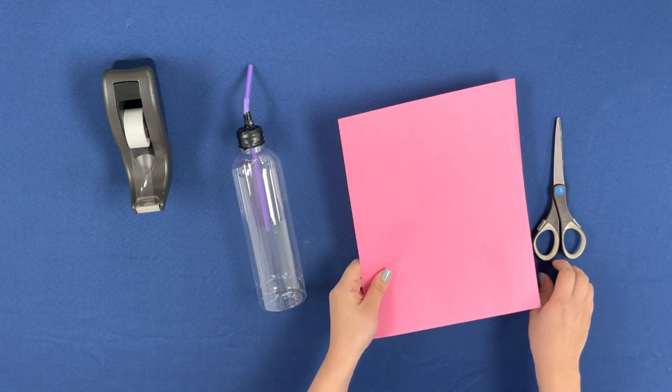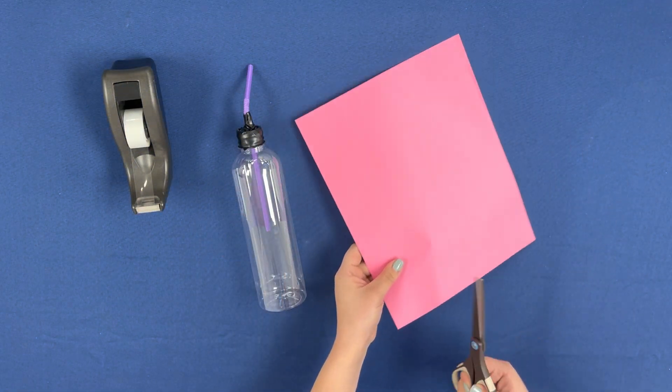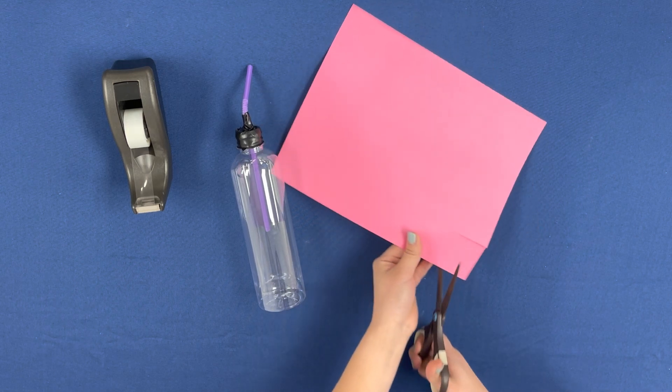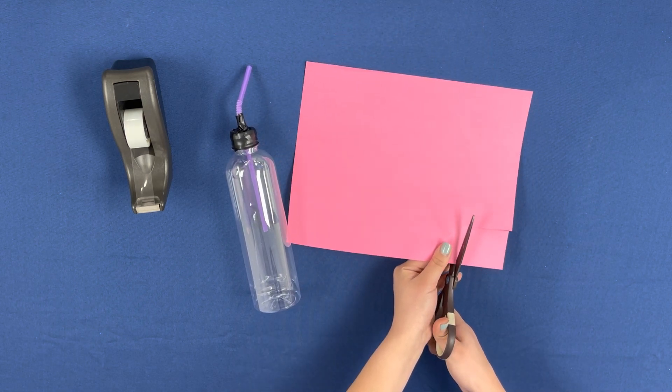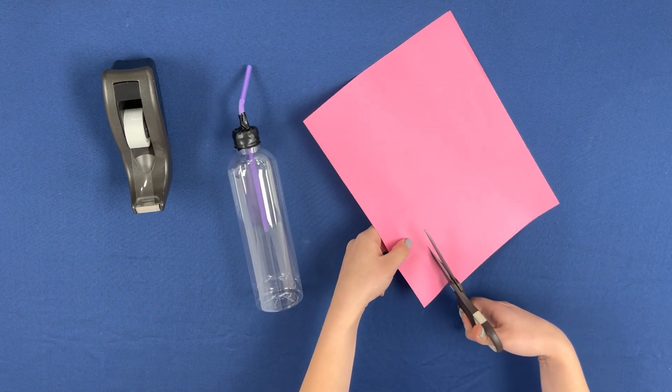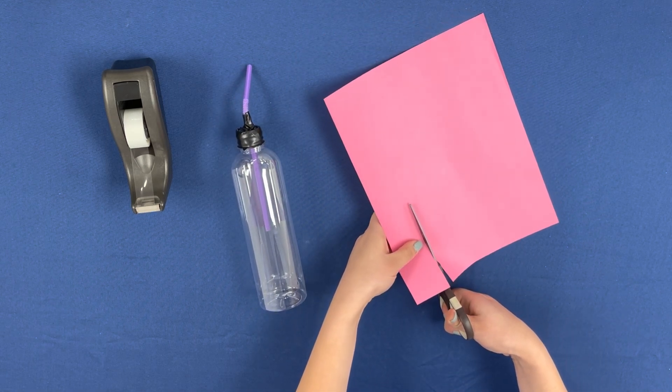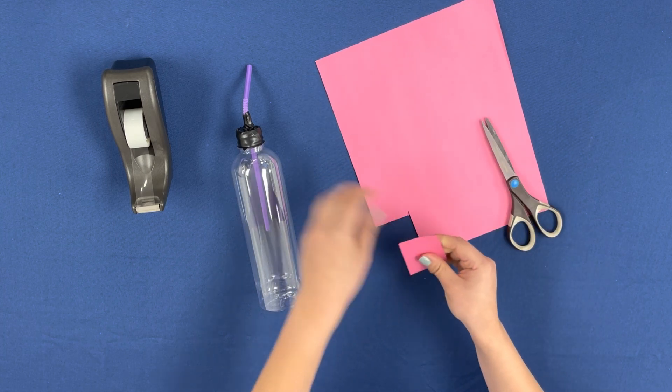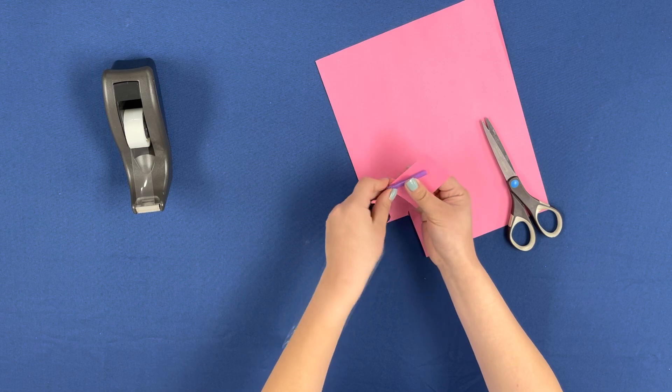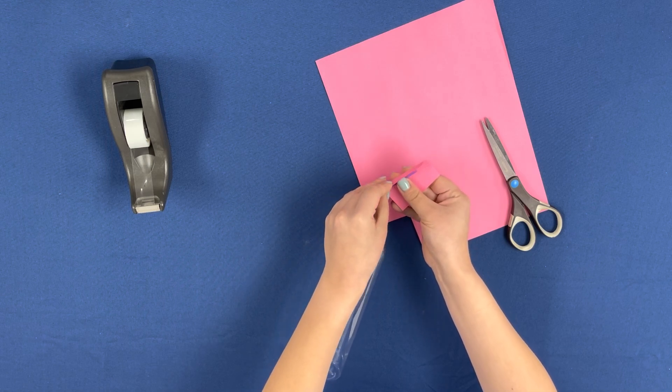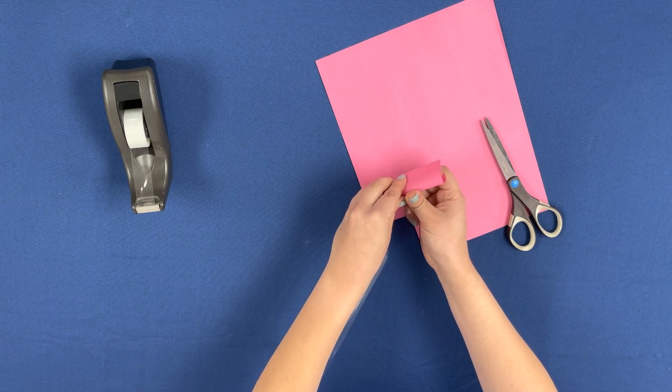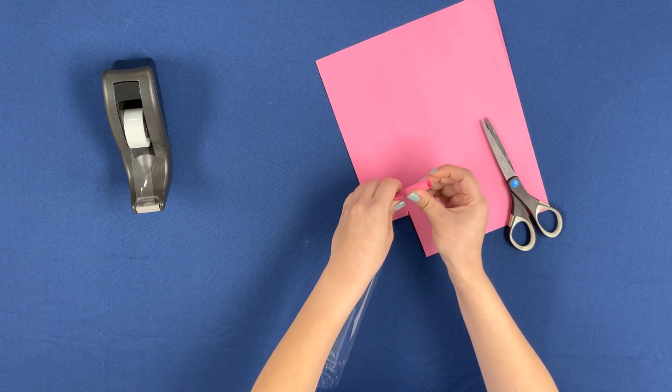Now, we are going to take the piece of paper and cut a rectangle large enough to fit the top of the bottle launcher. Then, you are going to roll it up around the straw, measuring to make sure that it fits the top of your bottle launcher.